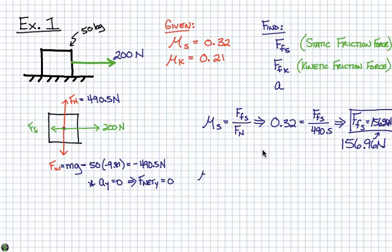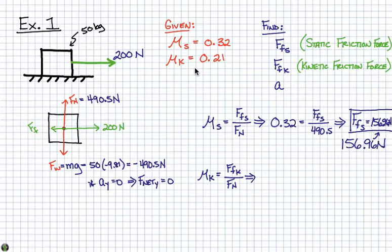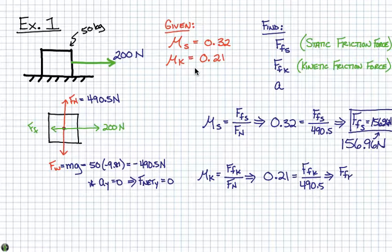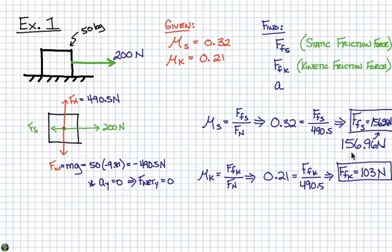Hopefully you can see that we do the same setup. However, we use the kinetic coefficient of friction, which in this case is 0.21, and it equals the kinetic friction force divided by the normal force. Using our kinetic coefficient of 0.21, we set it equal to the kinetic frictional force divided by the normal force, and we find that the force of friction once this object is actually moving is 103 newtons. So while it requires roughly 157 newtons to set this object in motion, once it's moving, we only need to apply 103 newtons or more to keep it moving.